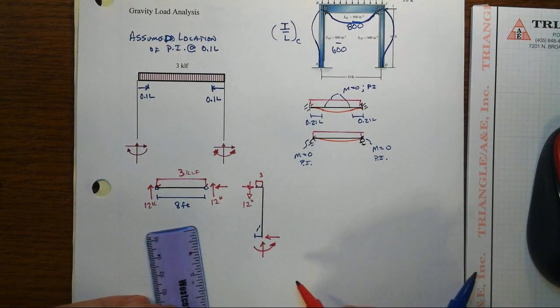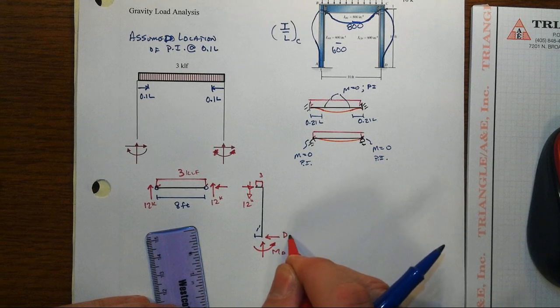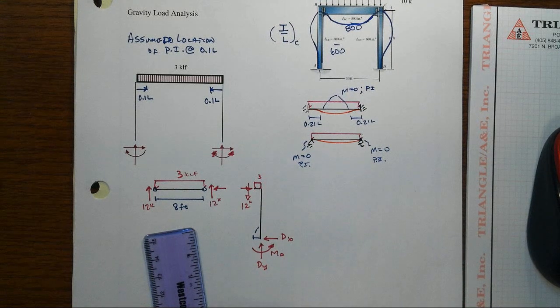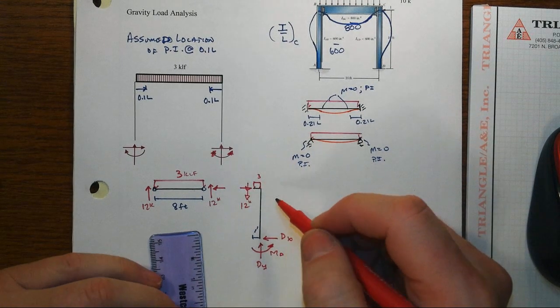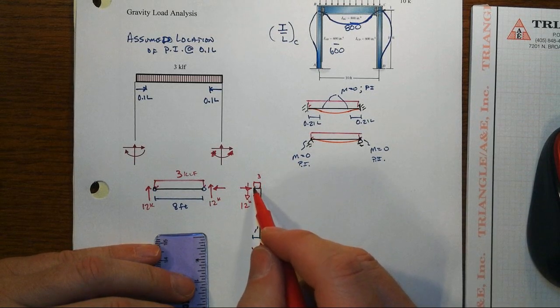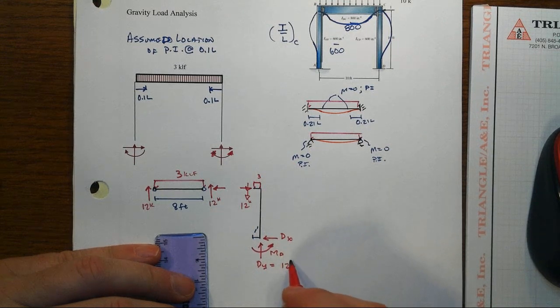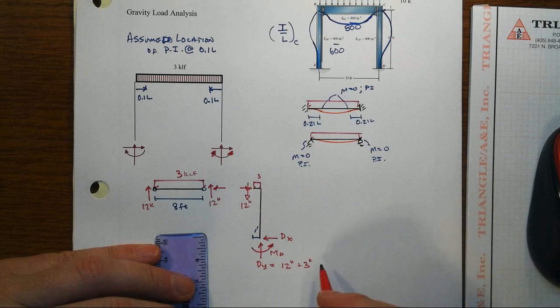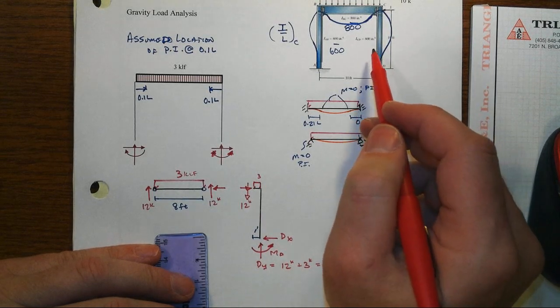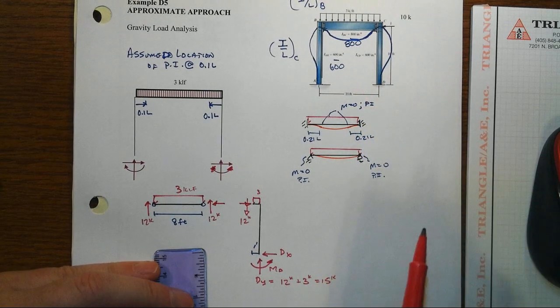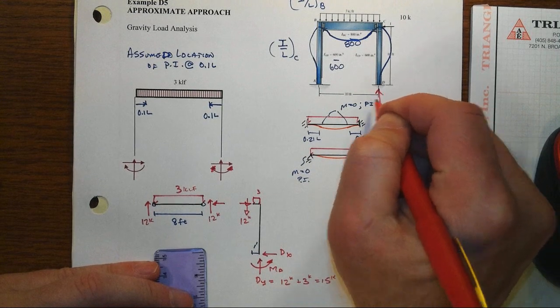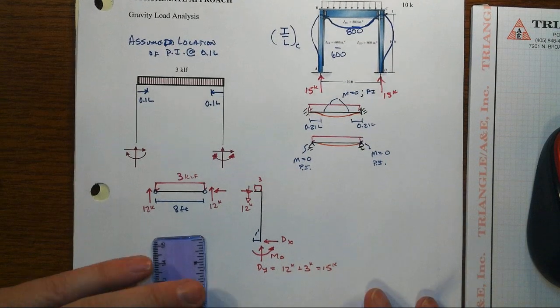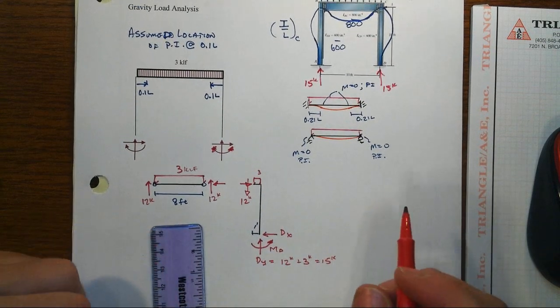Sometimes people will talk about assuming what these shears might be, but we don't really need to do that too much. Let's just take a look. Sum of forces in the y, then dy has to be the 12 kips plus then the 3 times the 1 to get 3 kips out of that, or 15 kips, which of course is one half of the total load that we had in the original system. Makes sense that dy would be 15 kips. We do it likewise on the other side and you get 15 kips over there too. With that then, we might have enough.